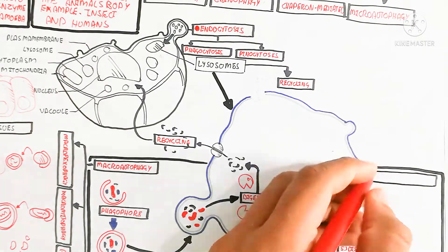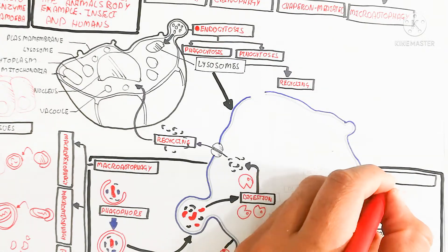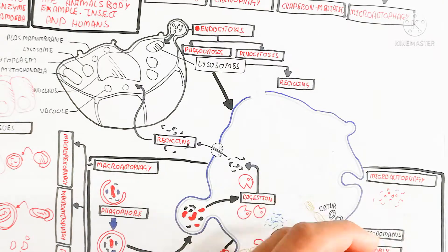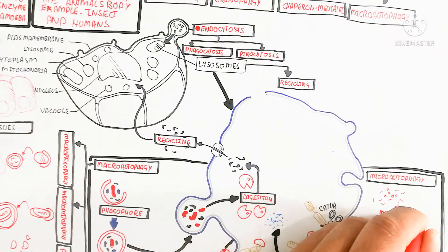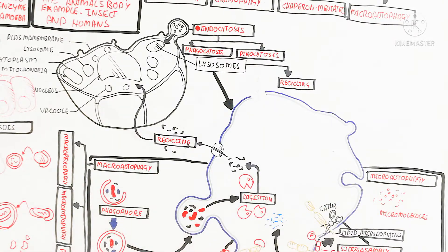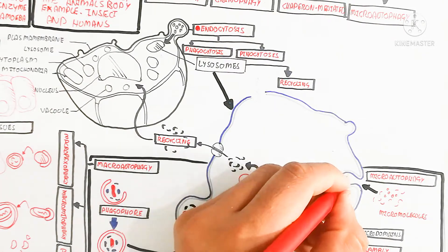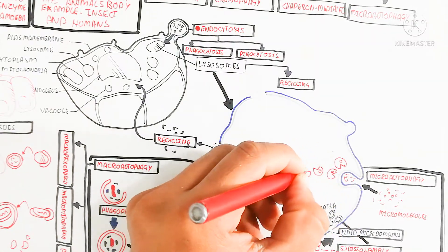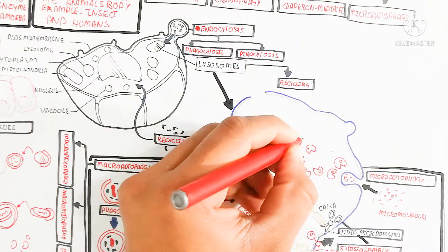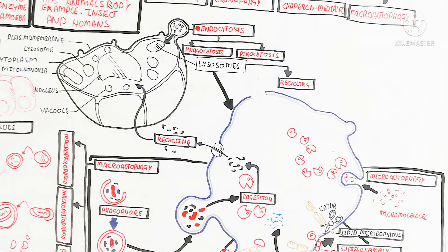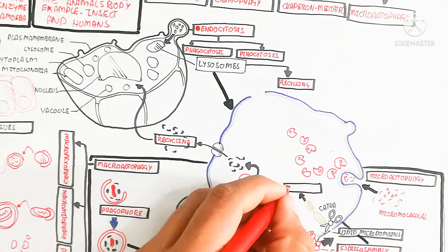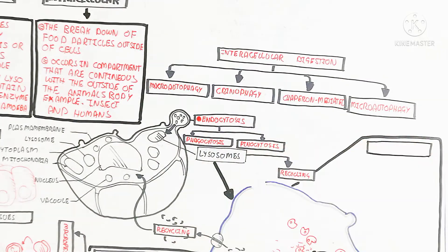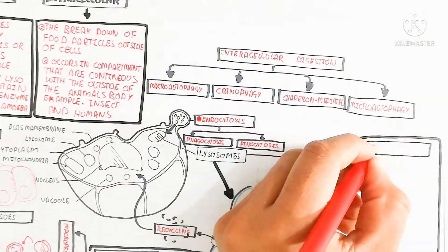Microautophagy involves very small, microscopic molecules. It is not as complex as the other types. The substrate is engulfed directly and enzymatic activity hydrolyzes the substrate in a relatively simple process.